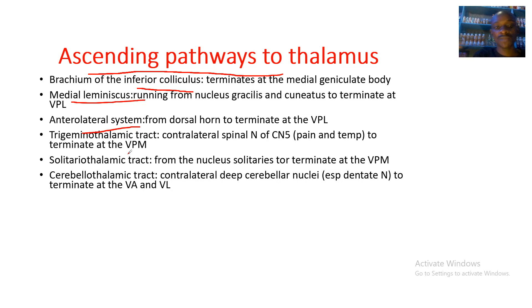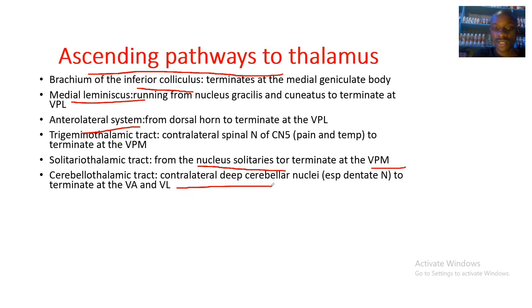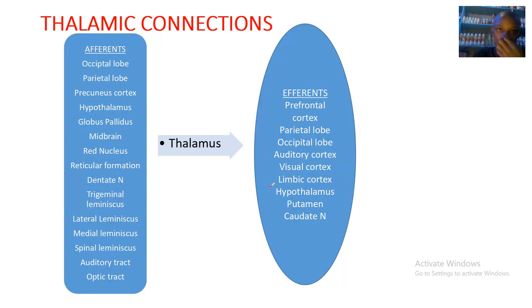We also have the trigeminal thalamic tract from the contralateral spinal nucleus of cranial nerve 5, carrying pain and temperature, to terminate at the ventral posteromedial nucleus. The solitariothalamic tract runs from the nucleus solitarius to terminate at the ventral posteromedial nucleus. The cerebellothalamic tract runs from the contralateral deep cerebellar nuclei, especially the dentate nucleus, to terminate at the VA and VL nuclei.